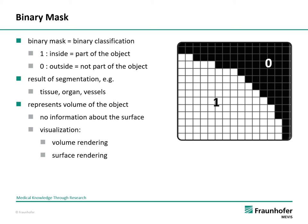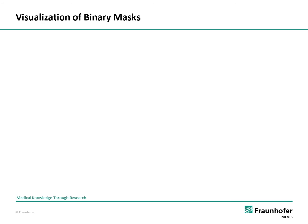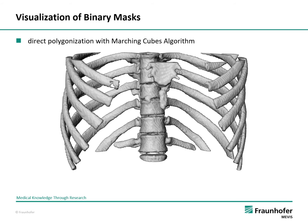There are two ways to visualize such masks: volume rendering and surface rendering. Binary masks are used in medical diagnosis, therapy planning, or treatment evaluation. To visualize a binary mask, one can use direct polygonization with a marching cubes algorithm to get a surface. Here is an example of a surface reconstruction from a binary mask with the marching cubes algorithm — it shows the rib cage of a human. Clearly visible are the staircase artifacts, which are a result of the limited values of a binary mask.